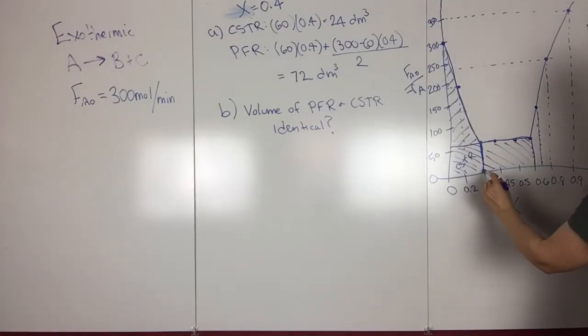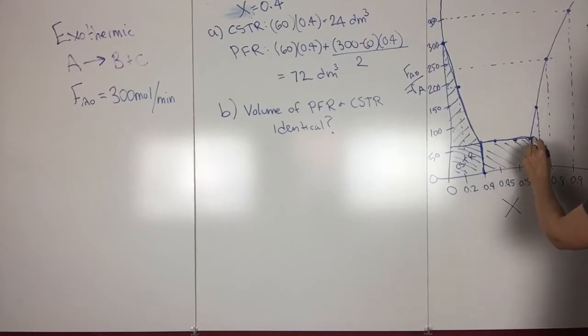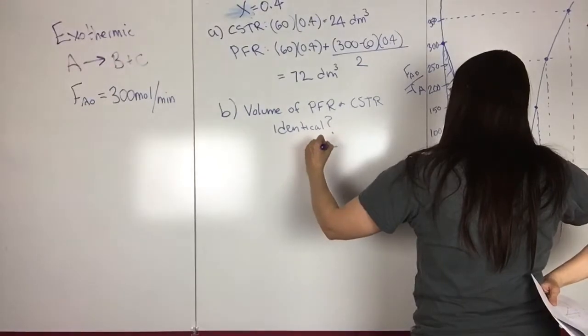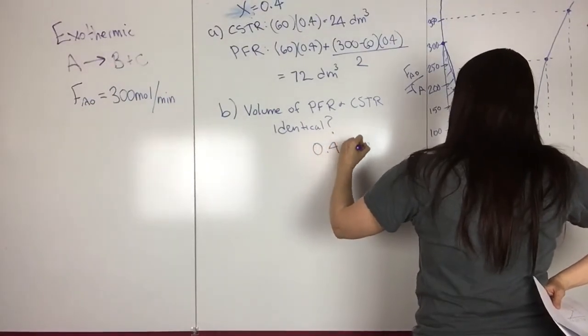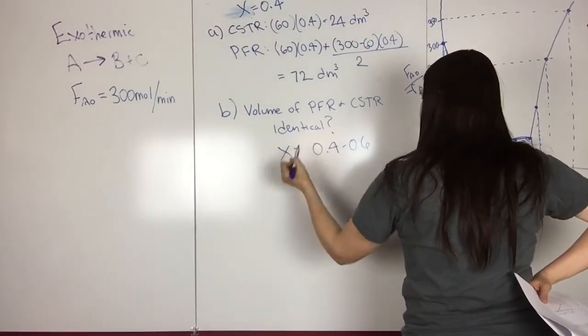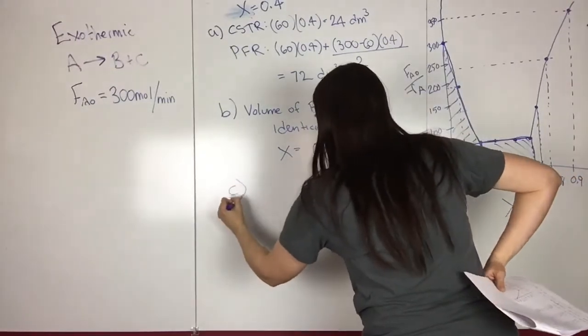So then looking at this, we can see that they'll be identical right here. And the reason why is because from 0.4 to 0.6, not from 0 to 0.6, so from 0.4 to 0.6, the CSTR, if we go up from 0.6, then the CSTR is this area, and then for the PFR, it's the area under the curve. So they're identical volumes from 0.4 to 0.6.